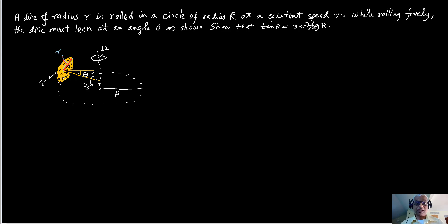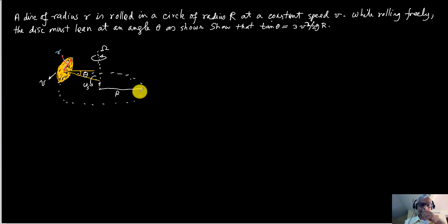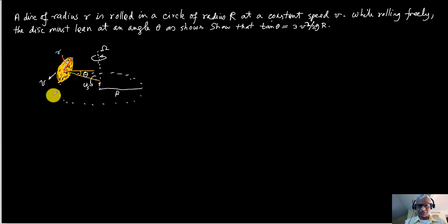Hello, welcome to another problem session. Today we have a really interesting and relatively difficult problem to solve. You are rolling a disk in a large circle — the large circle is not drawn to scale here — but the disk rolls freely in a constant circle, just going around.